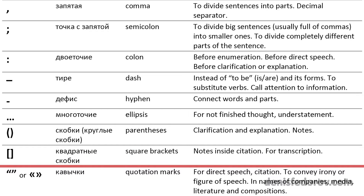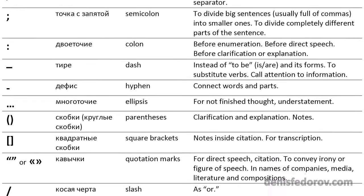Square brackets — квадратные скобки in Russian. In Russian we don't use them at all in everyday situations. But you may meet them as notes inside a citation, to convey transcription, or in mathematics. Generally we do not use them.